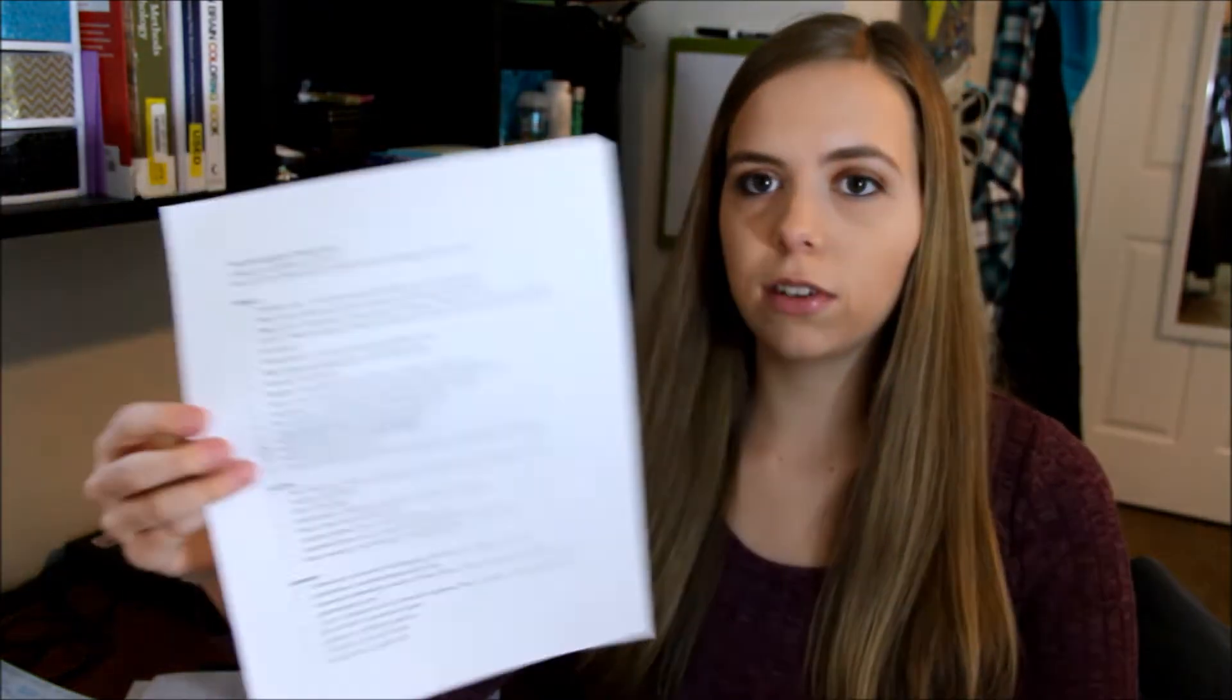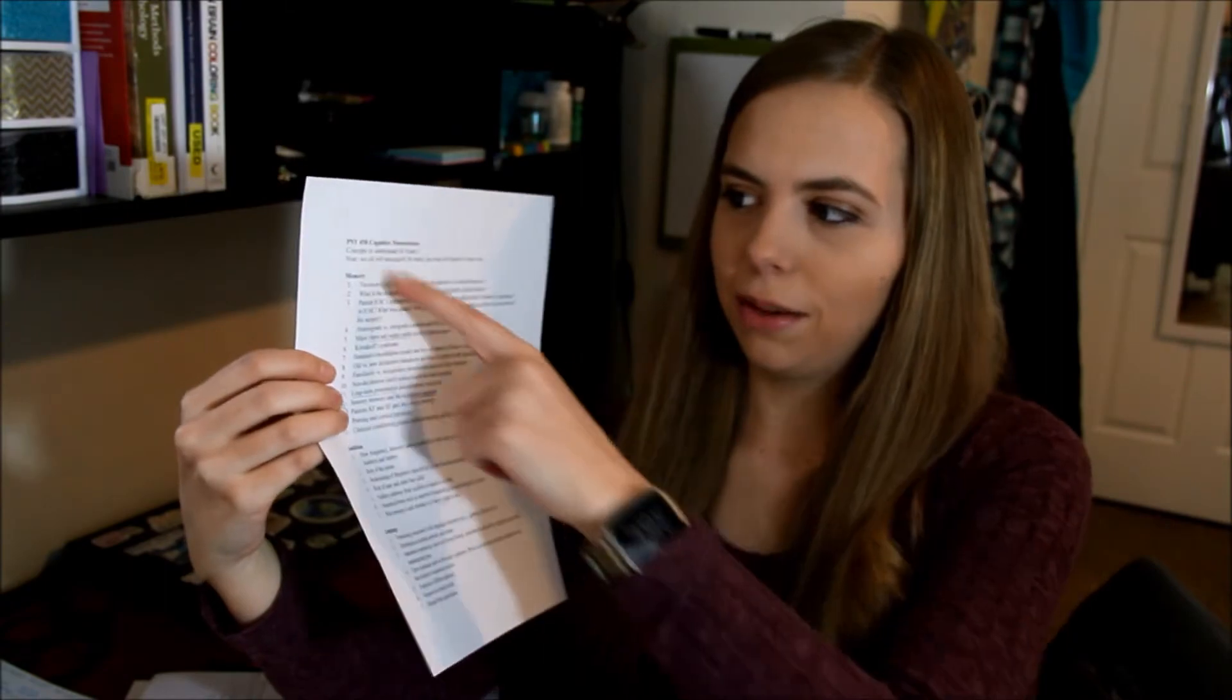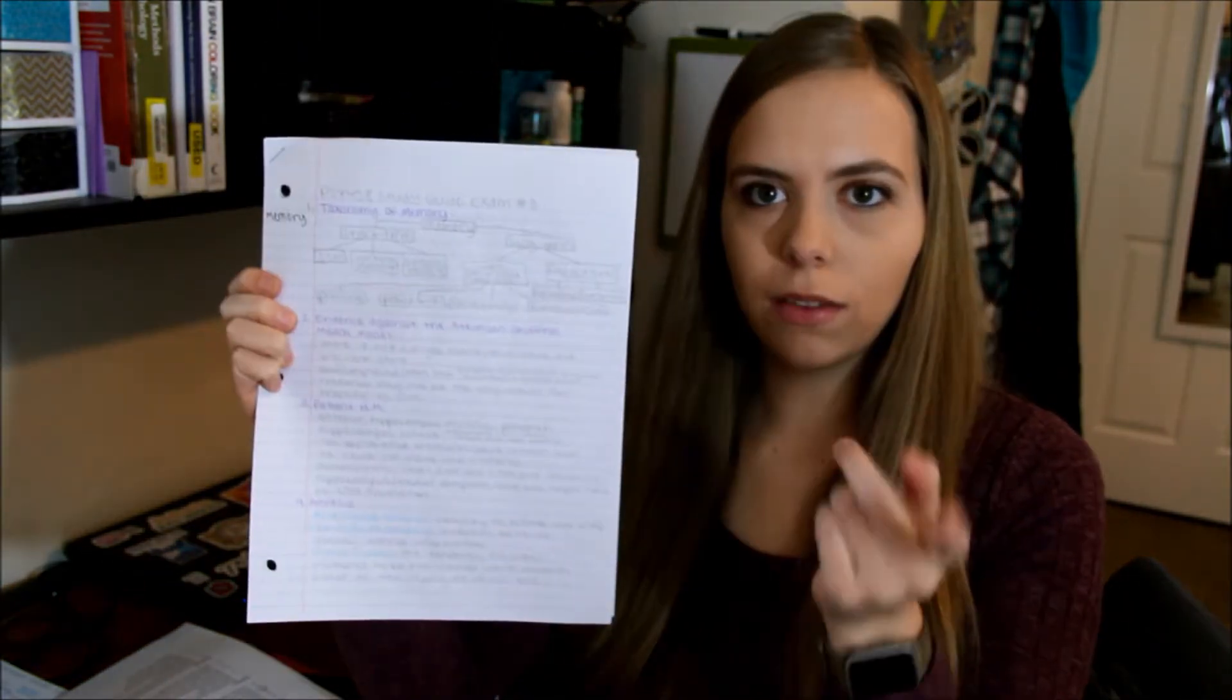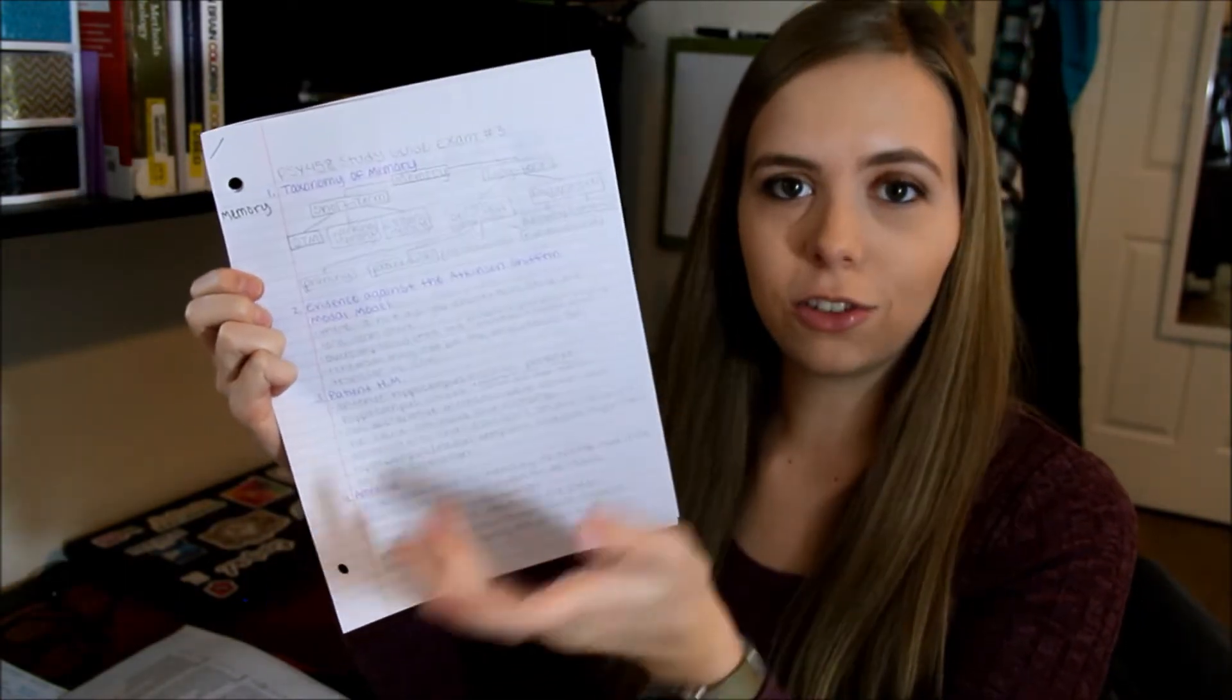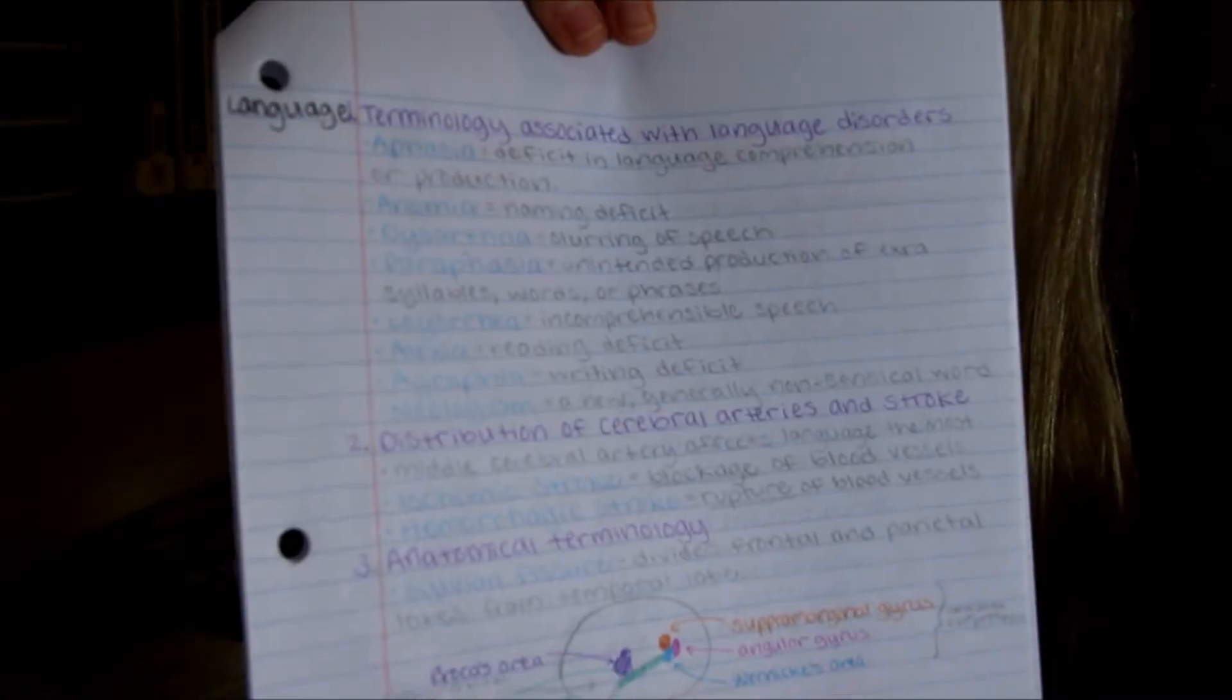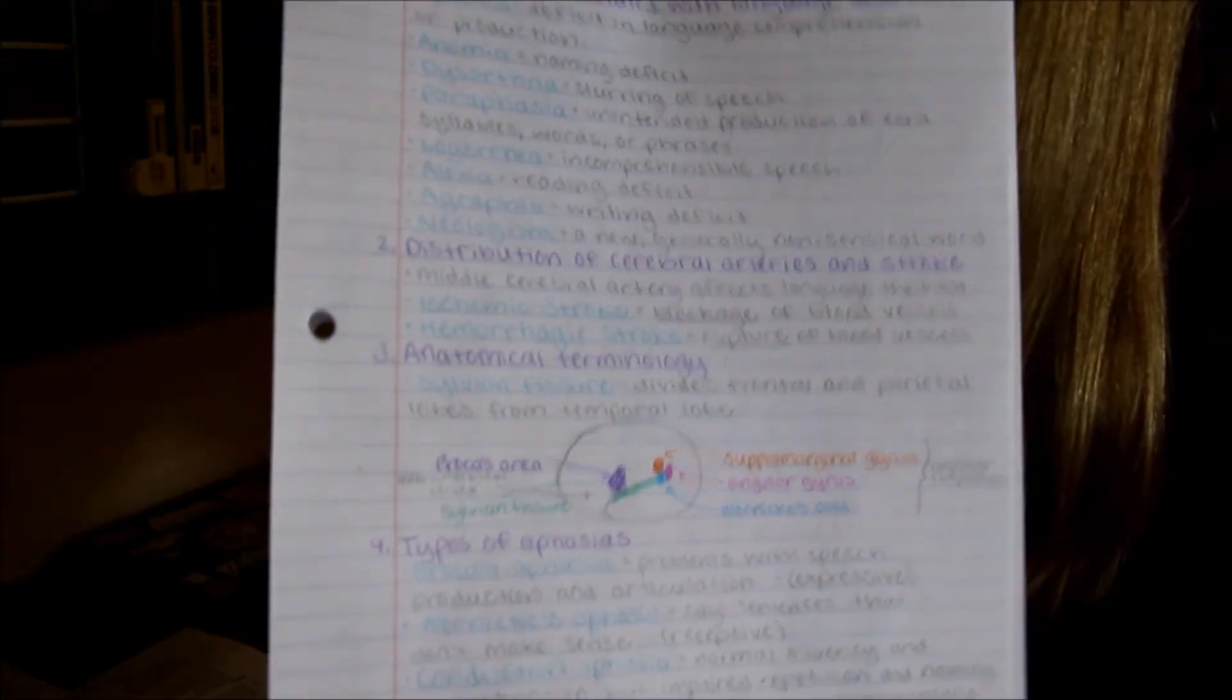This exam our professor gave us this study guide, but it's not really like a study guide like you get in high school where you like fill things out. It kind of just has like main topics and some questions under it. So I went through this and basically filled it out on here. So all of the questions from the study guide are at the top in purple, and then I wrote like my answer to it below in just normal pencil. Also in here, as you can maybe see, I have important vocab words in blue. So there you can see I have the main topic, the question, the vocab words, what they mean, and all of that.